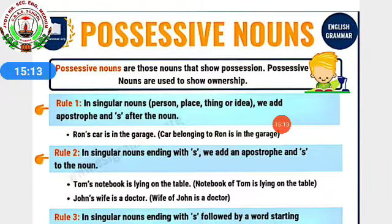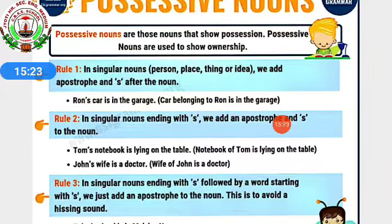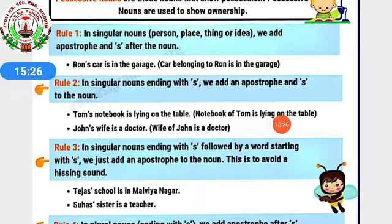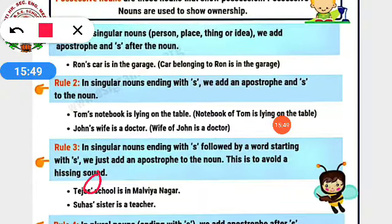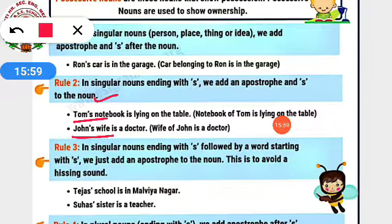Second rule: in singular nouns ending with s, we also add an apostrophe and s to the noun — like 'Tom's notebook is lying on the table', 'John's' with apostrophe s. Third rule: in singular nouns ending with s, followed by a word starting with s, we just add an apostrophe to the noun — to avoid a hissing sound. Like 'Tejas' school': Tejas ends with s and school starts with s, so apostrophe comes after the s, not before.